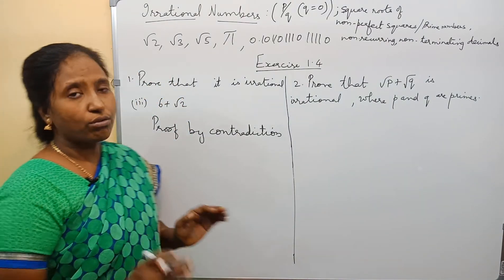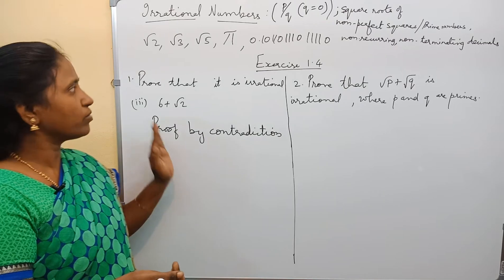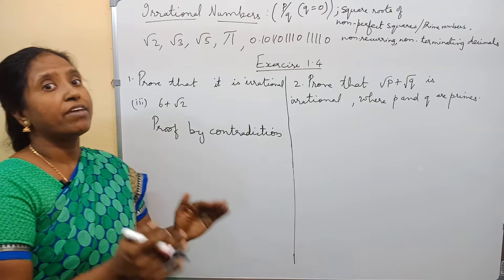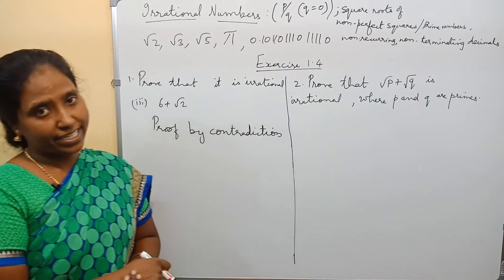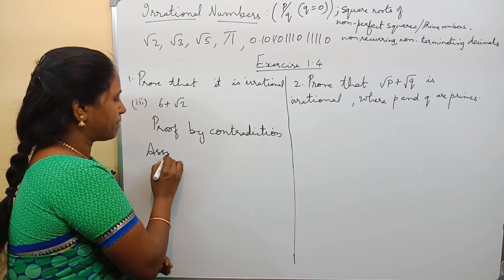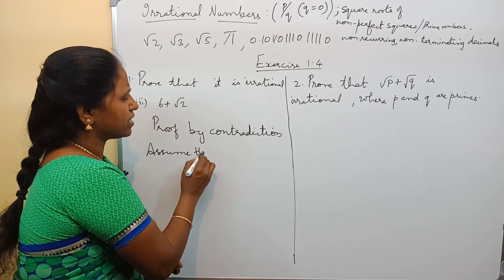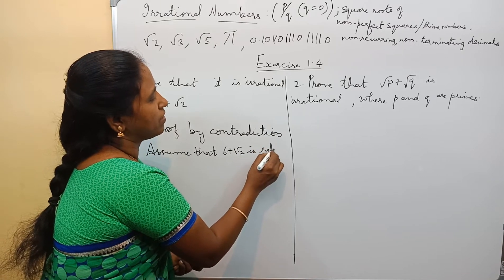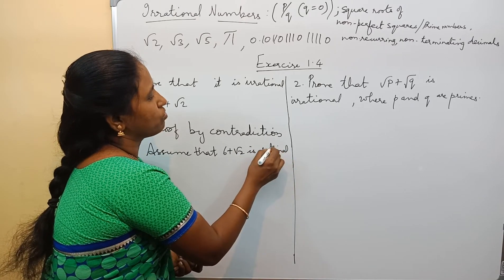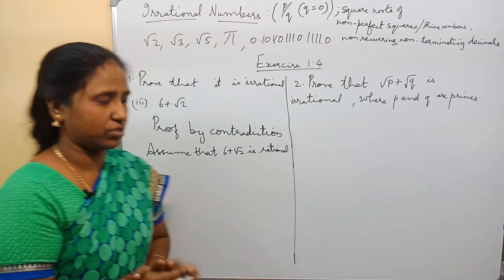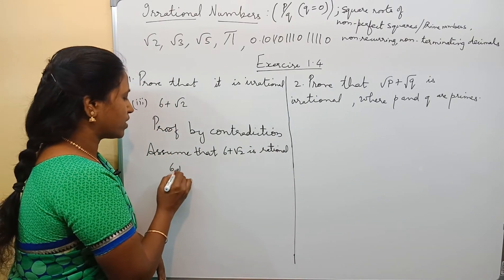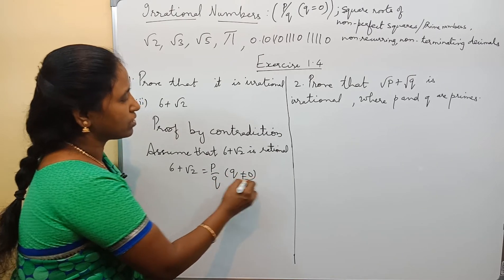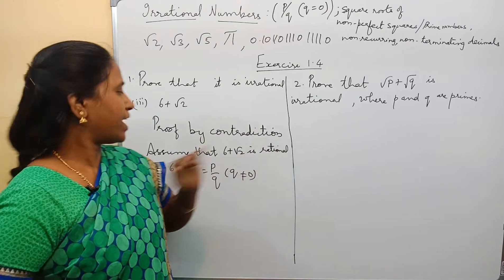We have to prove that 6 plus root 2 is irrational. What we are going to do is assume that it is rational. Assume that 6 plus root 2 is rational. So, if 6 plus root 2 is rational, we can express it in the form p by q, where q is not equal to 0.